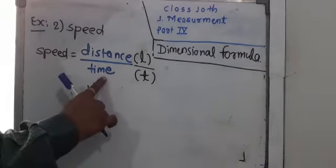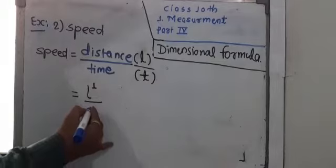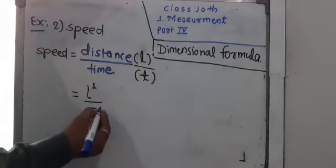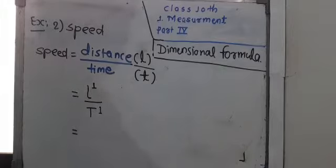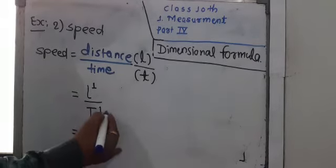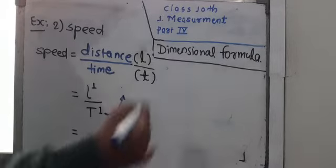Speed depends upon time one time, so I can mention T raised to 1. Now we have to write the dimensional formula for speed, but before that, we need to carry this division form upside.